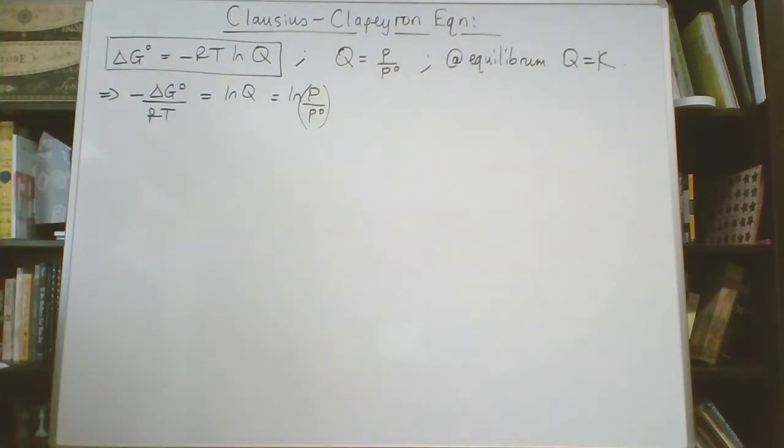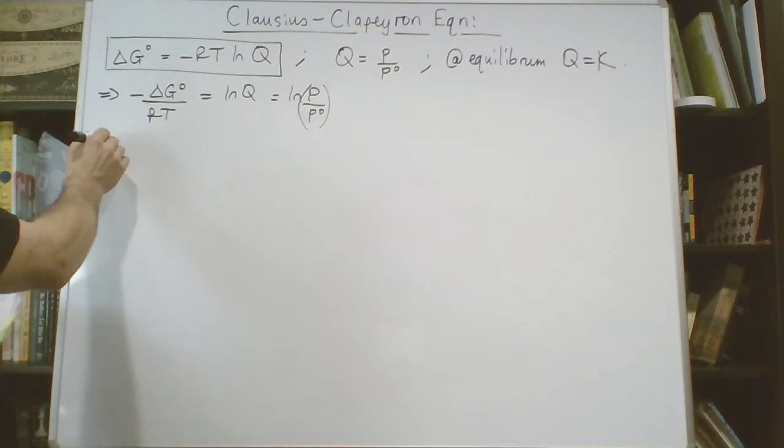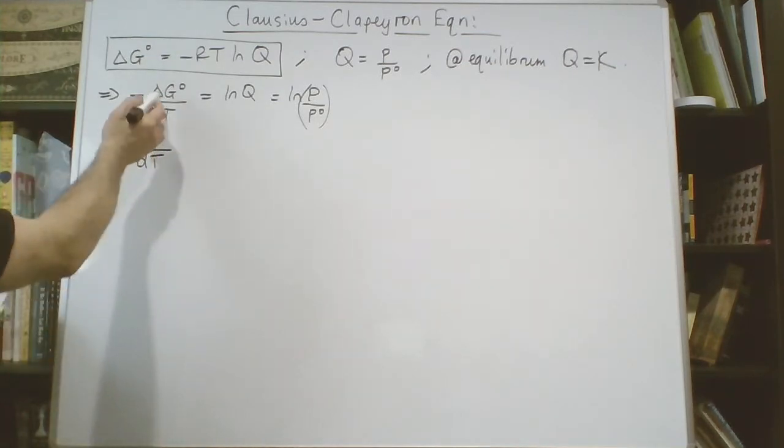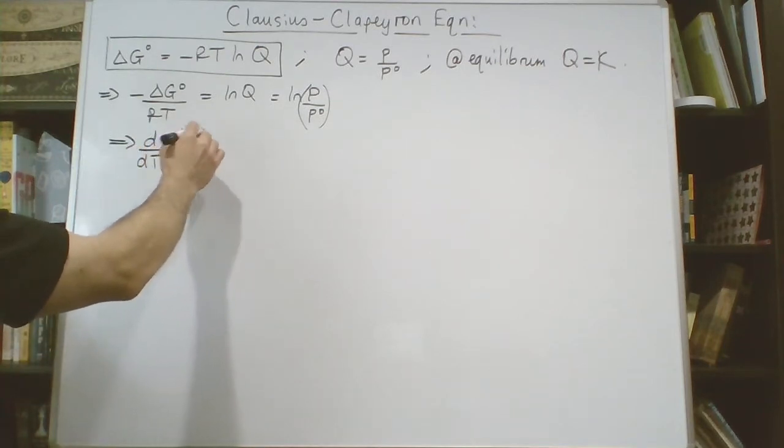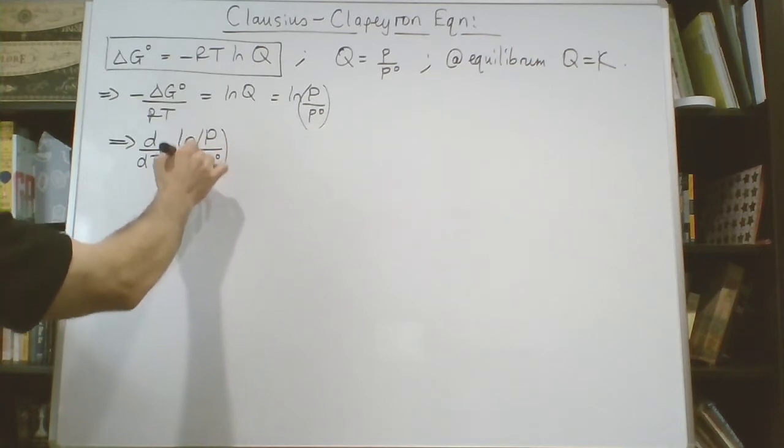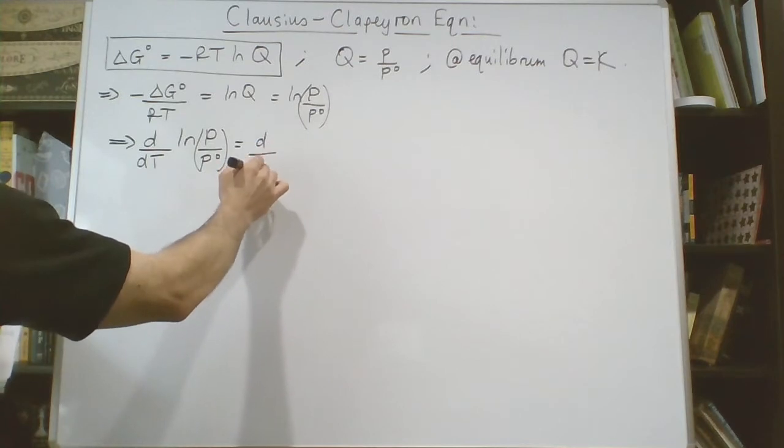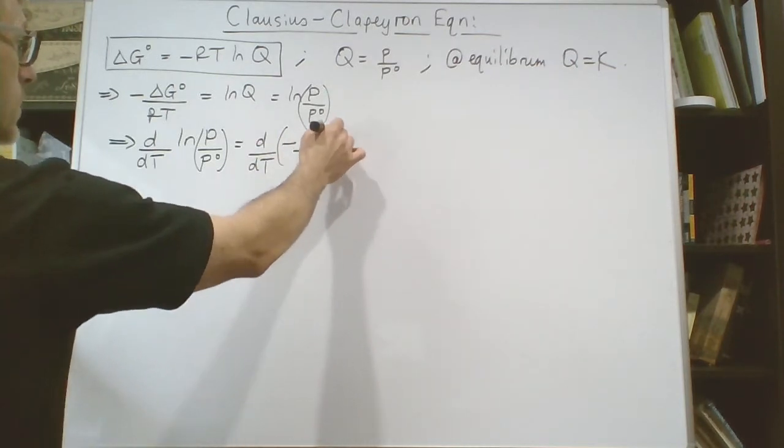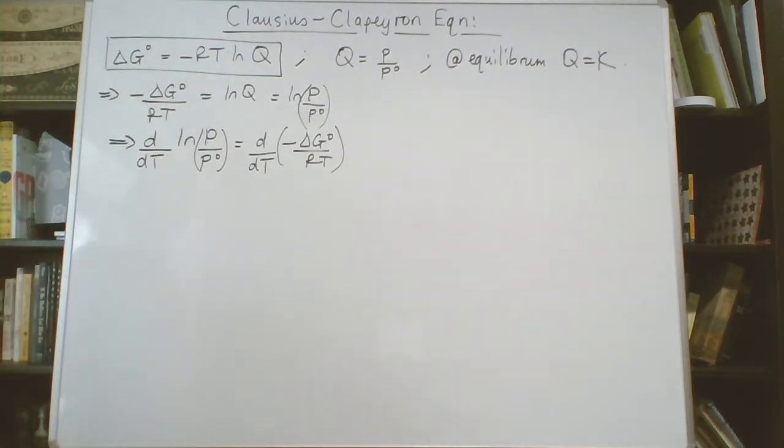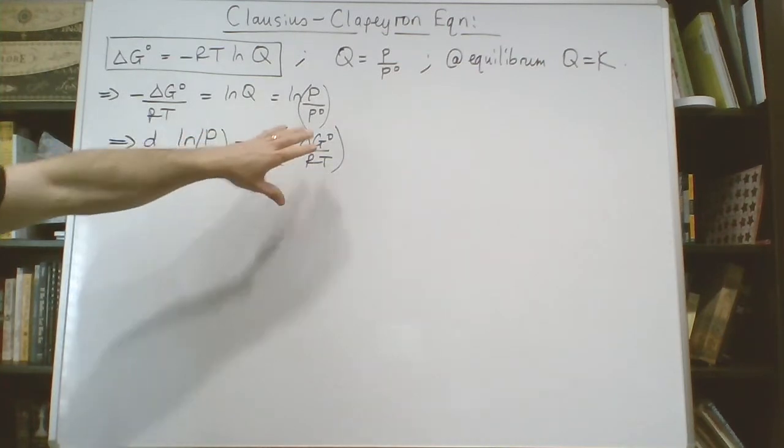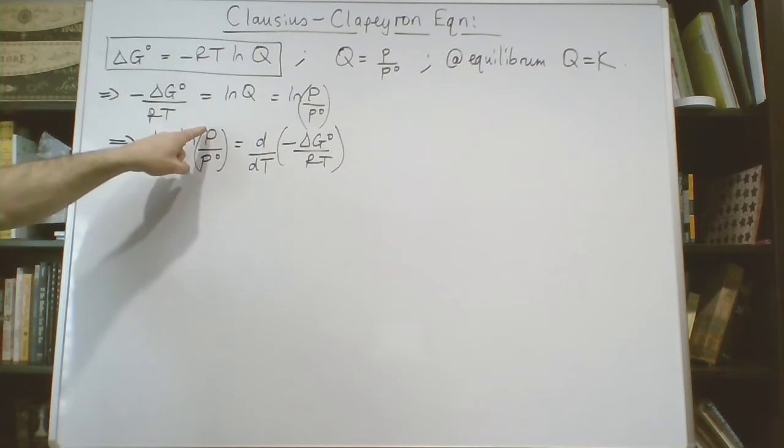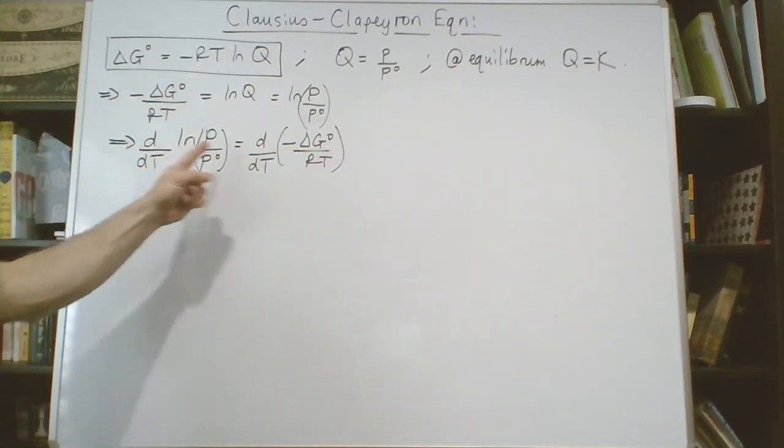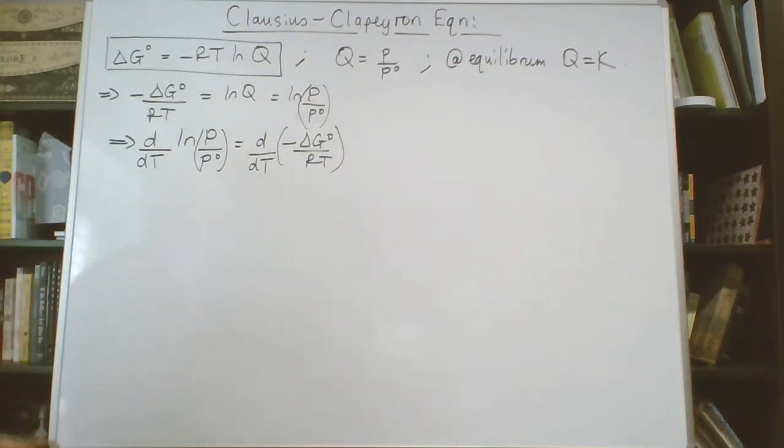This implies if we break this Δ down, we've got d/dT of log(p/p°) equals d/dT of minus ΔG°/RT. We're looking at the temperature dependence of these terms. We know that log(p/p°) equals negative ΔG°/RT, and we've just added d/dT to both sides, preserving the equality of the former equation.